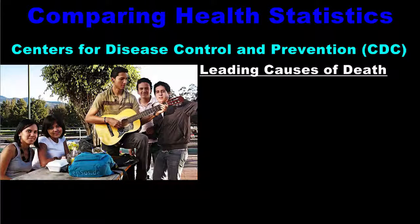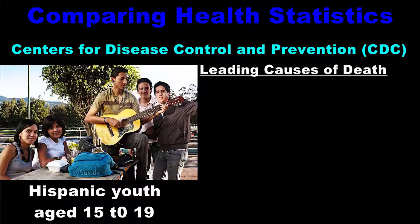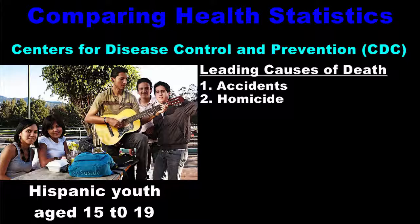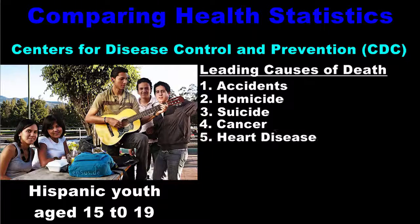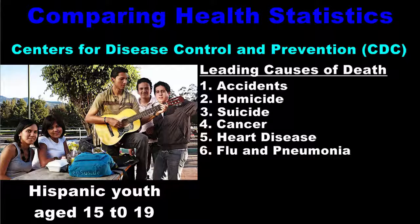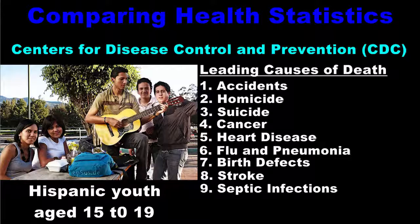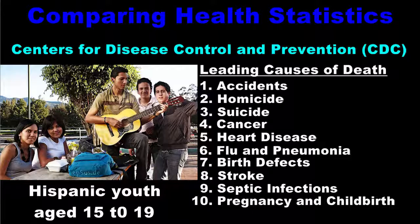In addition to monitoring a specific ethnic group, we can also hone in on a specific age group within that ethnicity. Suppose we were to examine the leading causes of death amongst Hispanic youth between the ages of 15 and 19. The leading causes of death amongst members of this group are as follows: accidents, homicide, suicide, cancer, heart disease, flu and pneumonia, birth defects, stroke, septic infections, and pregnancy and childbirth.